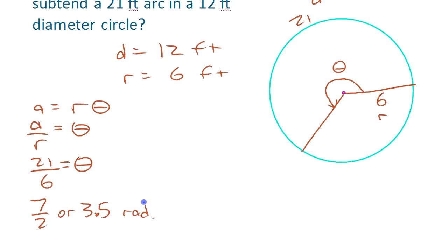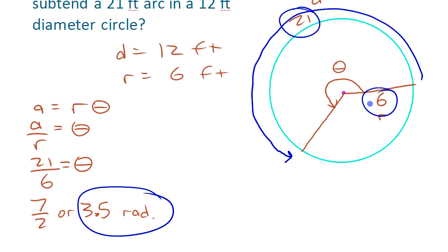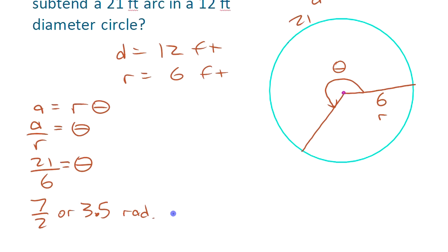Now, something that's important to remember here is, if you have an angle of 3.5 radians, it means you've gone 3.5 radii around the circle. Right? 21 is 3.5 of these. So that's all that means.